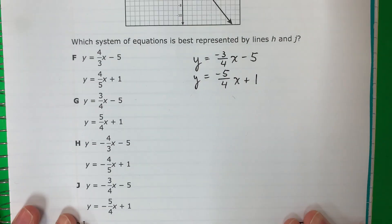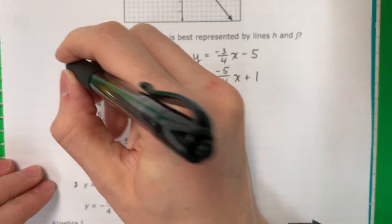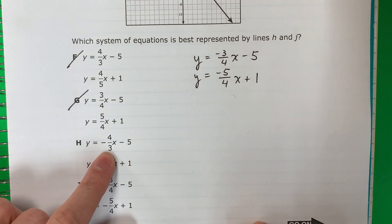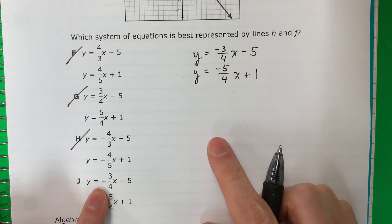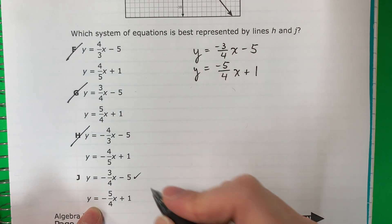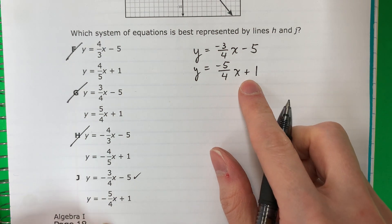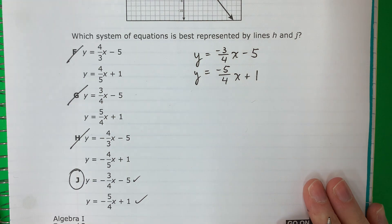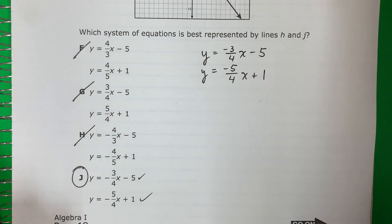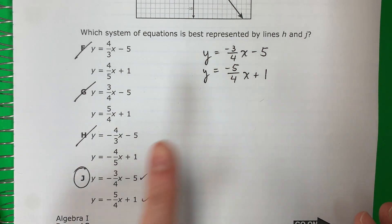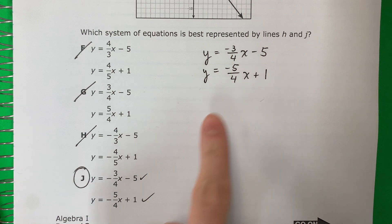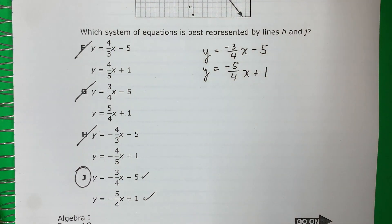So we have: y equals negative three-fourths x minus five for line H, and y equals negative five-fourths x plus one for line J. Let's look at the answer choices carefully — be very careful when comparing. Many people make mistakes here because they are not careful. That matching option is the answer. Thanks for watching — please subscribe and leave a comment.